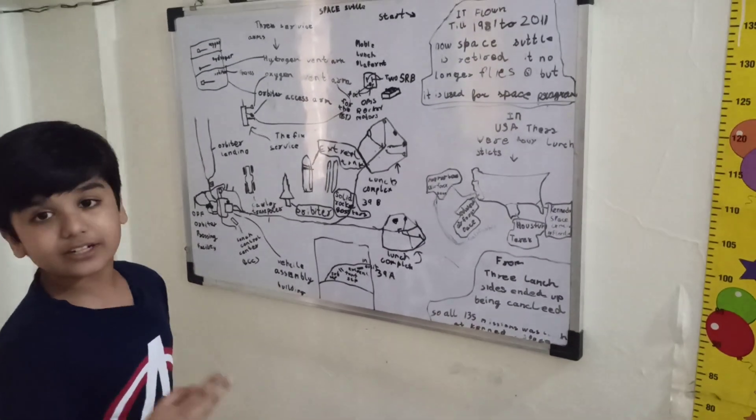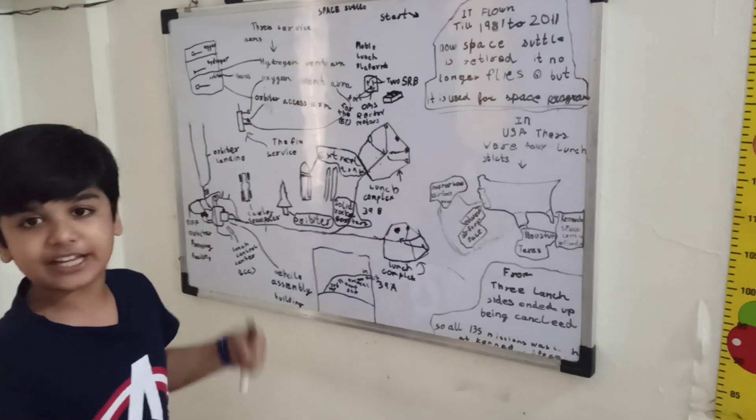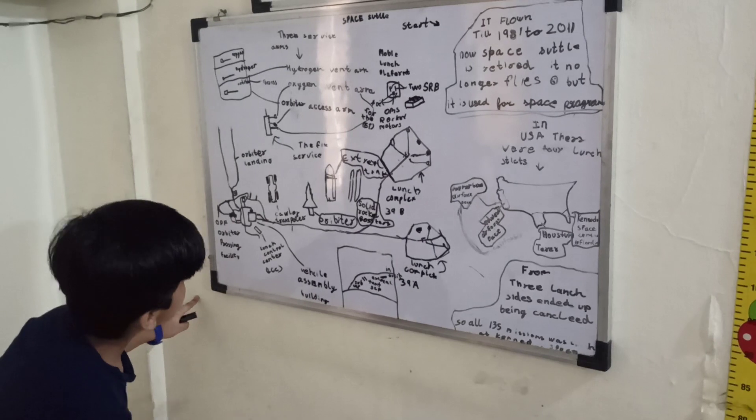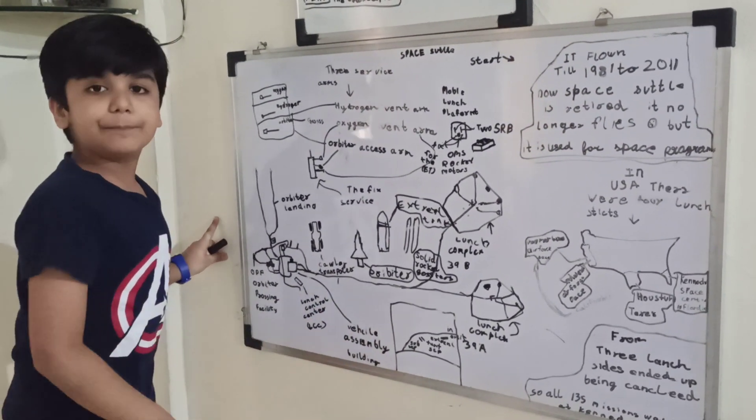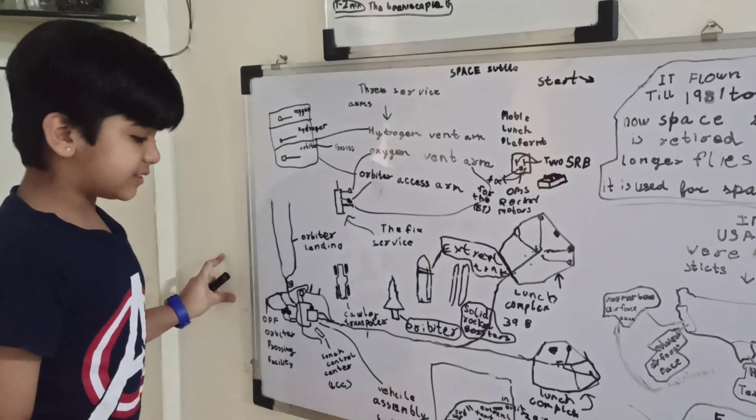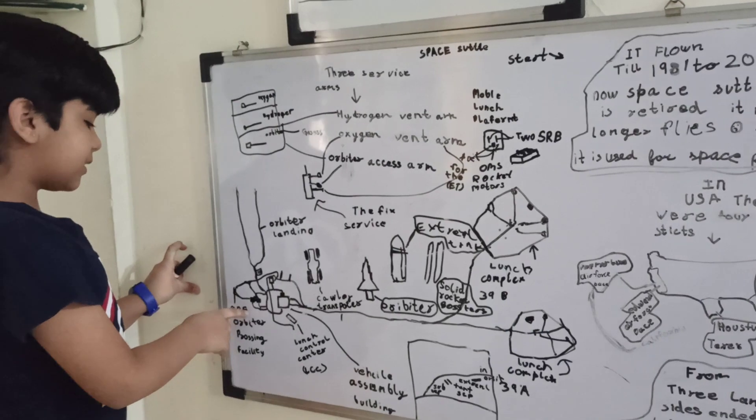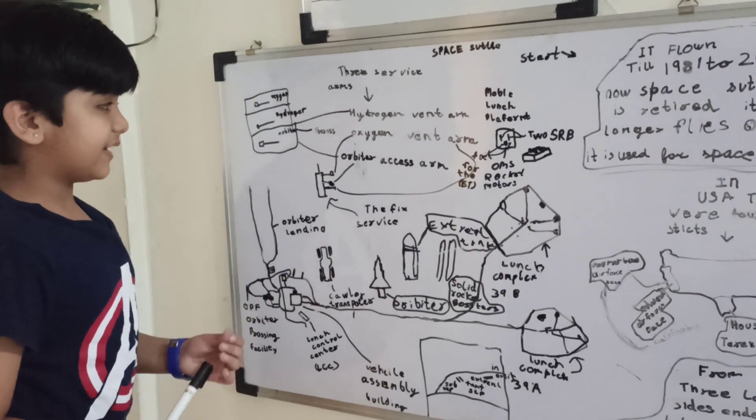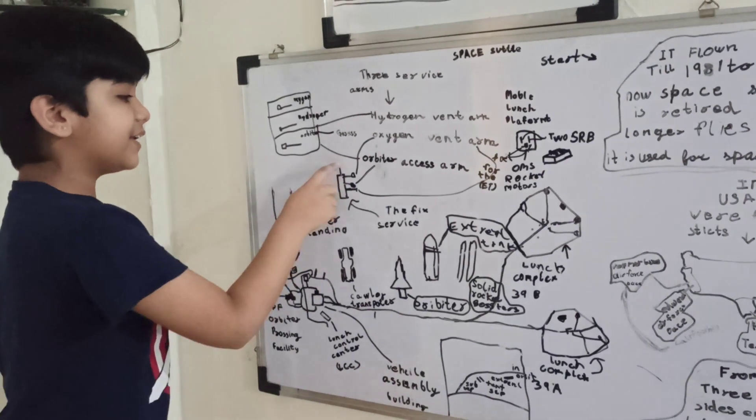Now let us see the two service structures. One is the rotating service structure and the fixed service structure. The rotating service structure has payloads which can be kept on the orbiter vehicle. Sometimes the payloads are kept here on the launch pad and sometimes at the OPF building. The fixed service structure has three arms and the lightning mast on top.